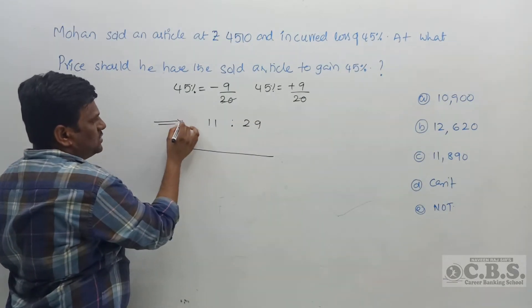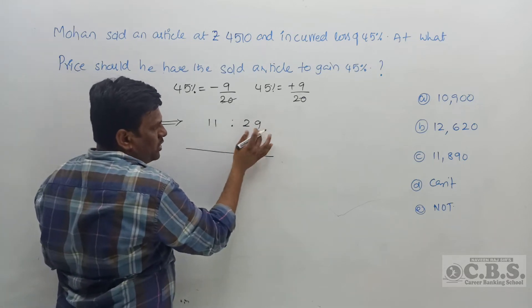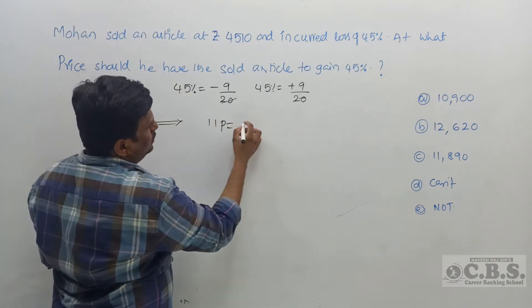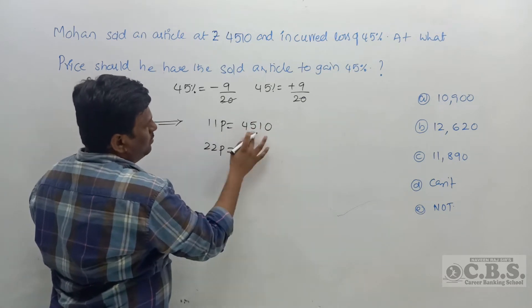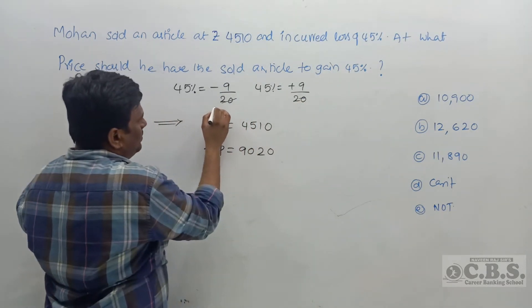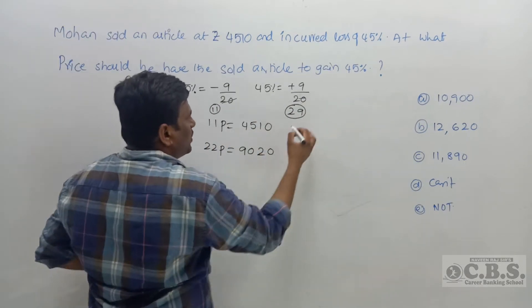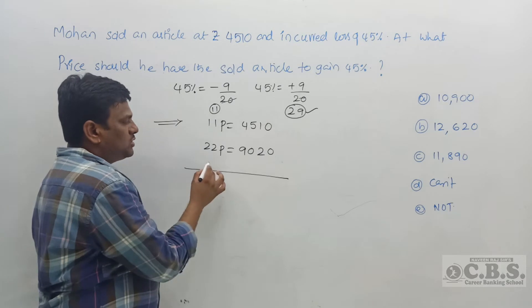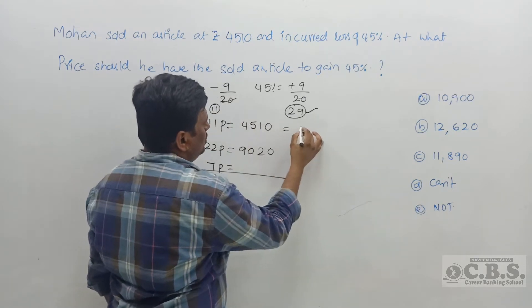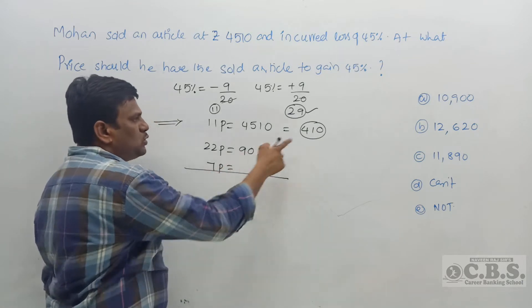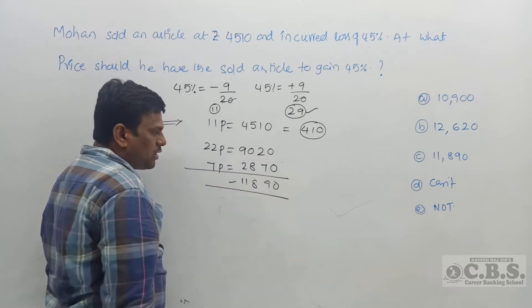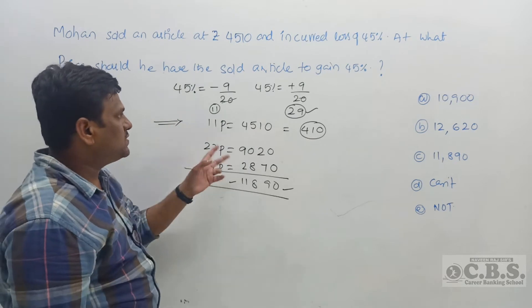We have 11 parts = 4,510 rupees. To find 29 parts: double 11 parts gives 22 parts = 9,020 rupees. We need 29 parts, but already have 22 parts, so 7 parts remain. One part = 4,510 ÷ 11 = 410 rupees. Seven parts = 7 × 410 = 2,870 rupees. Adding 9,020 + 2,870 gives 11,890 rupees.